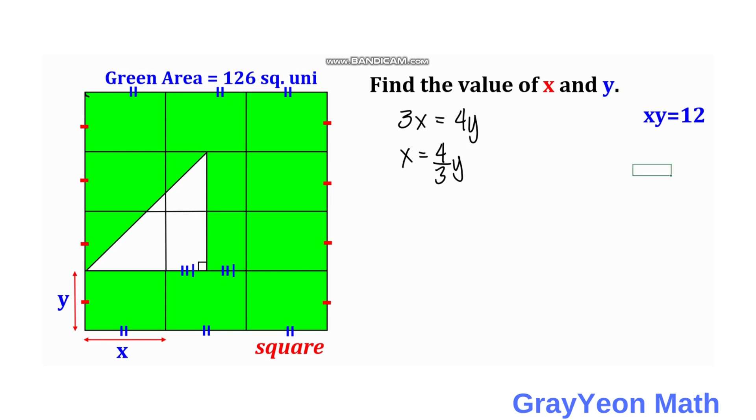After getting x equals 4/3 y, substitute it into xy equals 12. We have 4/3 y times y equals 12. Cross multiplying, y squared equals 12 times 3/4.